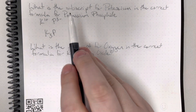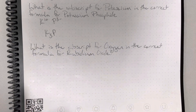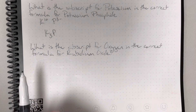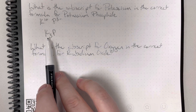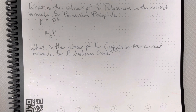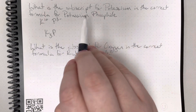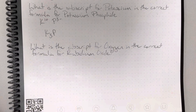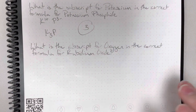Before finalizing my answer, I'm going to see if I can simplify the ratio. The ratio 3 to 1 cannot be simplified, so the subscript for potassium is 3.